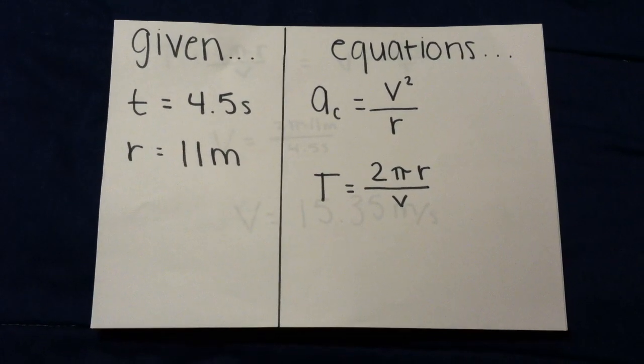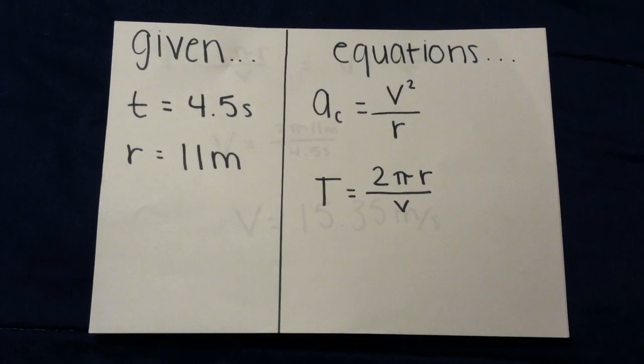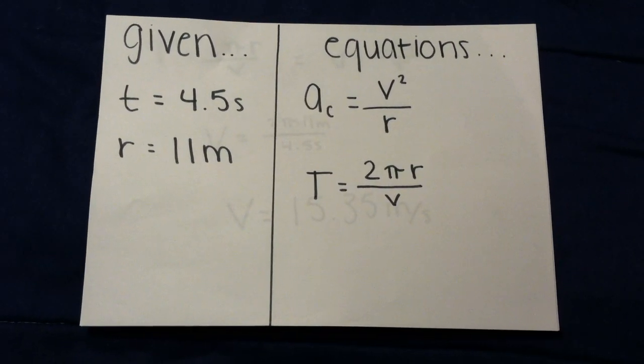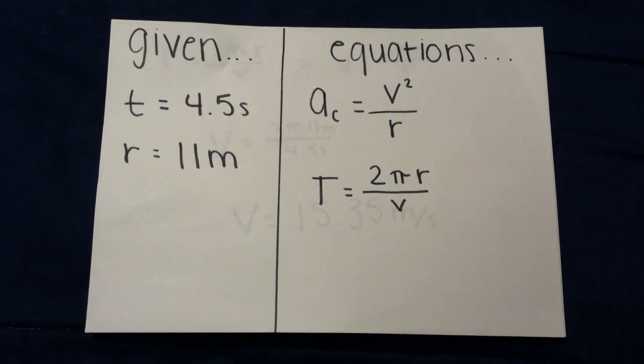Time equals 4.5 seconds and radius equals 11 meters. The two equations are the centripetal acceleration which is velocity squared divided by the radius, and time equals 2 pi radius divided by velocity.